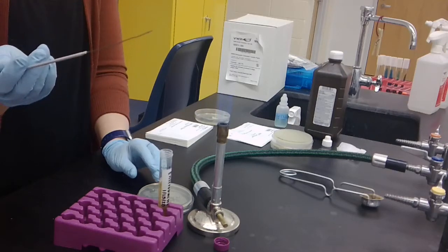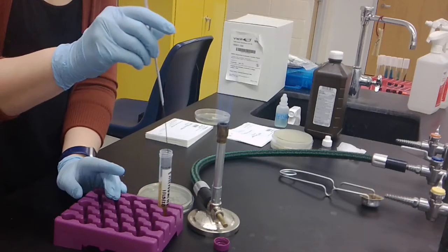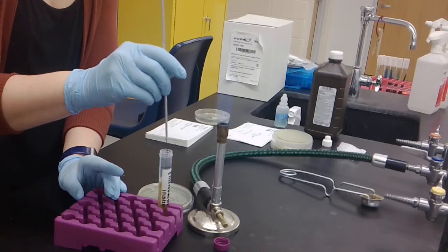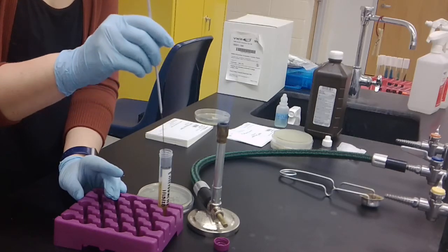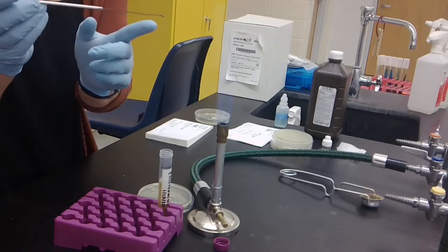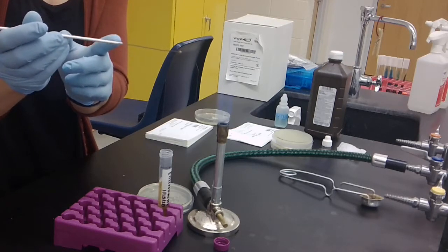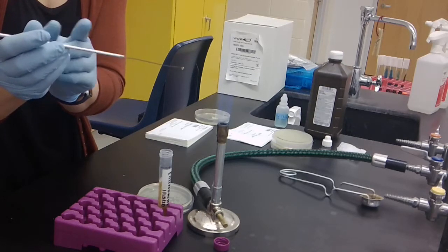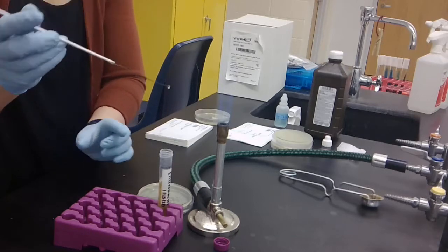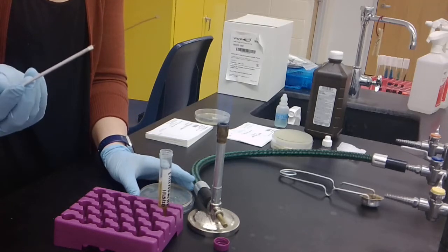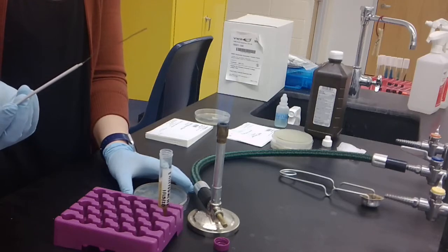You're then going to take your incinerated loop and dip it into your bacterial culture just enough so that the loop itself enters the culture. You sterilize the entire metal portion of your loop, but not the handle at all, so you don't want to get the handle into that tube. You only need to dip far enough to get bacteria onto the loop itself.